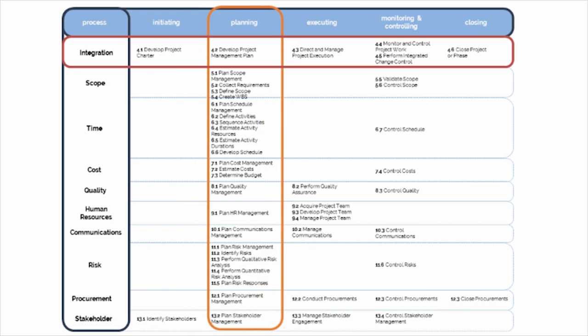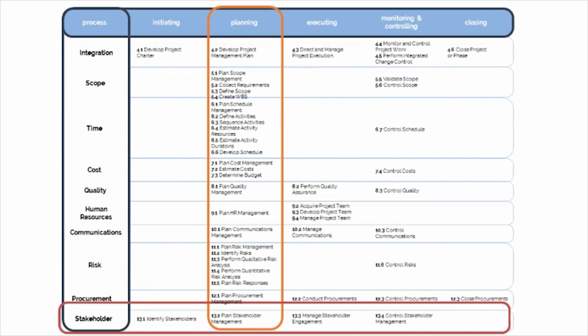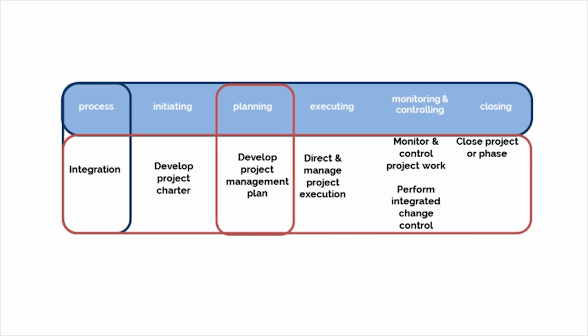The integration knowledge area is unique compared to other knowledge areas in that it kind of houses all of these other processes as they go on in the other knowledge areas. As you look down this column, you'll see that all of these other knowledge areas contain processes that have to do with planning. These planning processes, as they are handled through the various knowledge areas — scope, time, cost, and so on — all really contribute to and become part of the overall project management plan. So the develop project management plan process in the integration knowledge area actually includes all of these other processes.